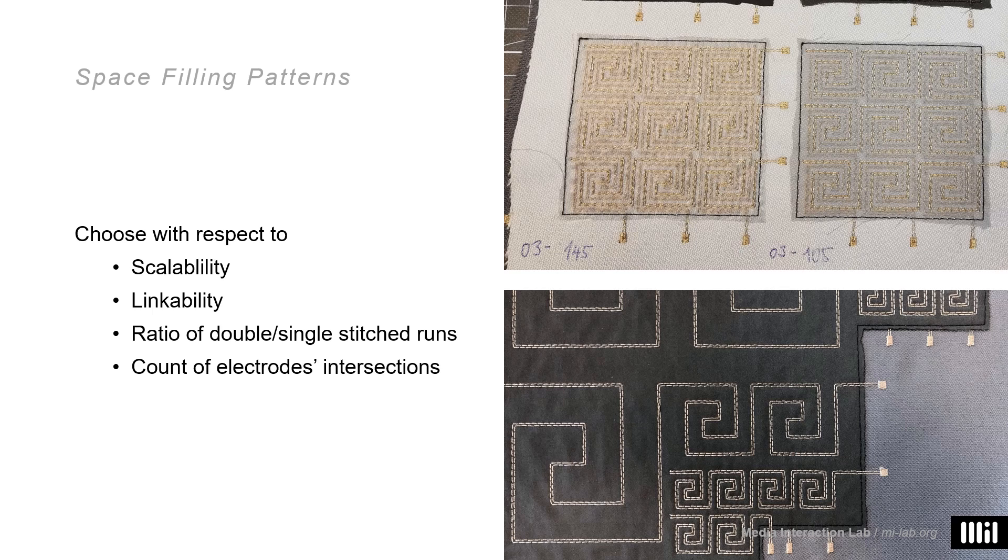Note that for the meander pattern, the electrodes have to be on different layers, thus separated by a resistive sheet. One electrode is below, one above. Otherwise you would get, obviously, a short at the center where one trace crosses the other. Some other patterns don't require these intersections; they aren't always beneficial.